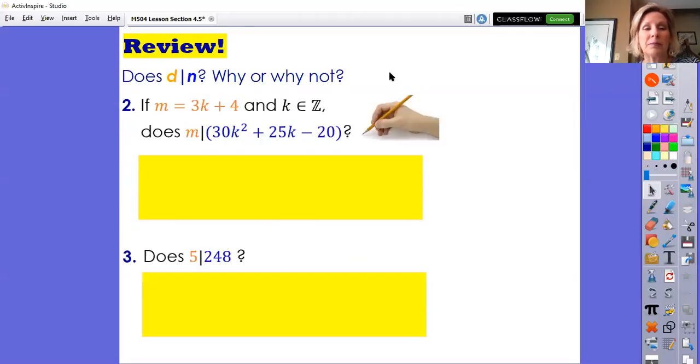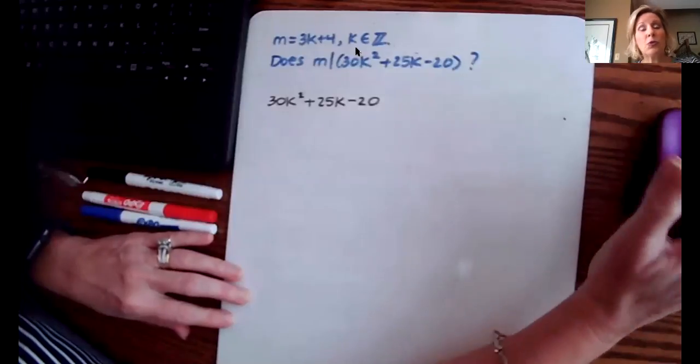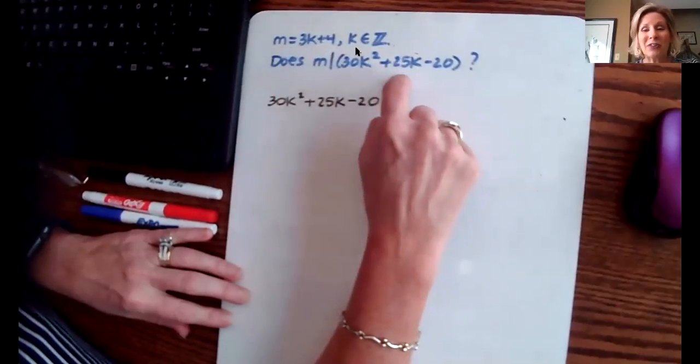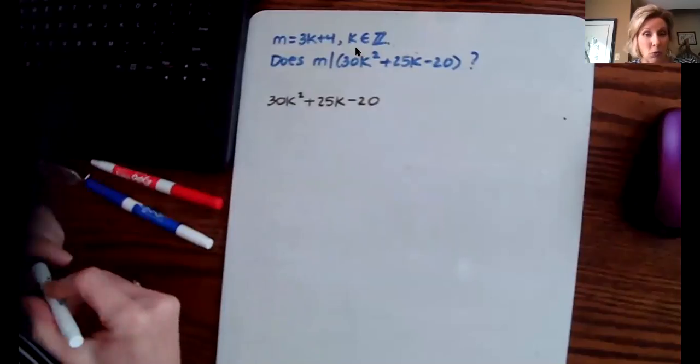So on our next question, does m divide 30k² + 25k - 20? Now it says that m is 3k + 4, and since k is an integer, I could just write that k is some integer. I know that m must be an integer as well, and my quadratic expression is also an integer. So I'm still asking, does one integer divide another? This one's more complicated, let's do scratch work. The real question is: if m divides the quadratic expression, then m—or 3k + 4—is a factor of the quadratic expression. That tells us what we ought to do is factor.